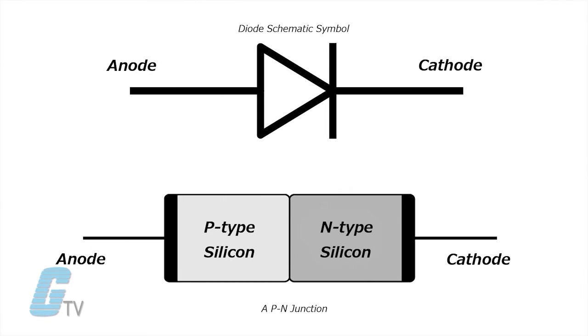A diode is an electronic component with a single PN junction and two terminals that functions like a check valve in that it allows current to flow in one direction and not the other.